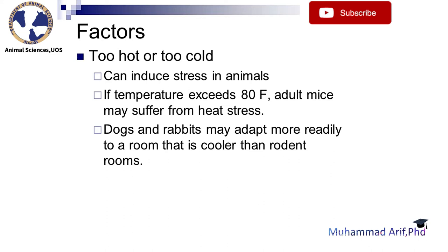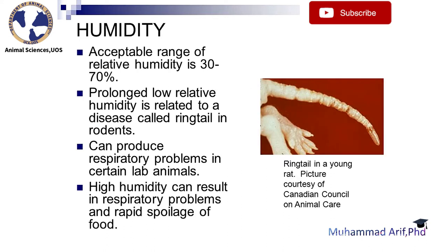Dogs and rabbits may adapt more readily to a room that is cooler than rodent rooms. Regarding humidity, the acceptable range of relative humidity is 30–70%. Prolonged low relative humidity is related to a disease called ringtail in rodents and can produce respiratory problems in certain lab animals.